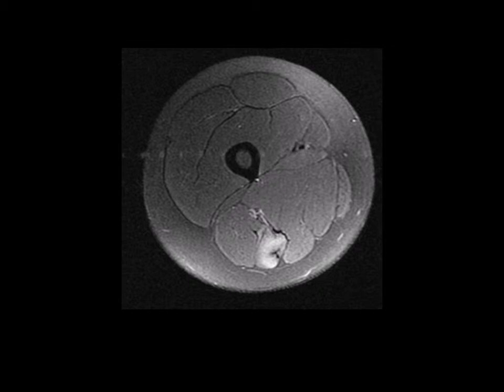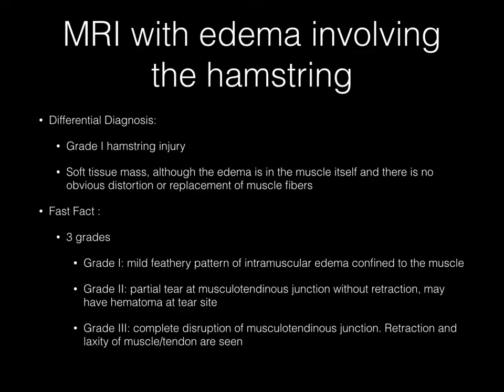Now pause your media player. This axial image from a fluid sensitive MRI sequence demonstrates edema involving the hamstring. The differential diagnosis includes a grade 1 hamstring injury. Soft tissue mass could also be included, although this edema is in the muscle itself and there is no obvious distortion or replacement of muscle fibers.